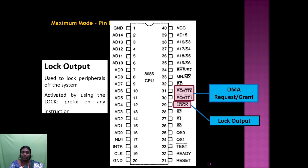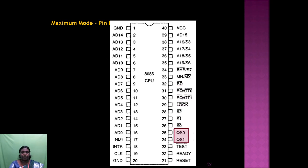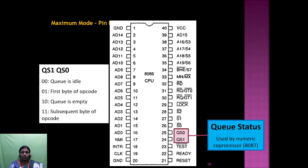QS0 and QS1 are queue status pins used by the numeric coprocessor (8087). The 8086 supports coprocessing and multiprocessing using these pins. QS0=0, QS1=0: queue idle; QS0=1, QS1=0: first byte of output; QS0=0, QS1=1: queue empty; QS0=1, QS1=1: subsequent byte of output.